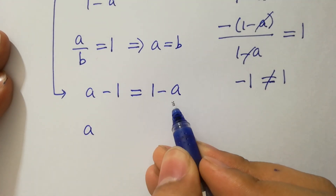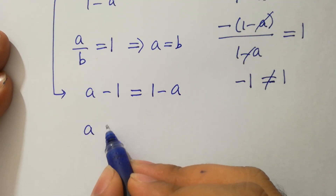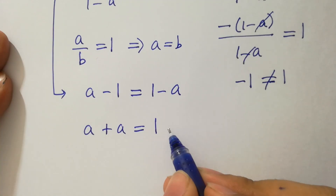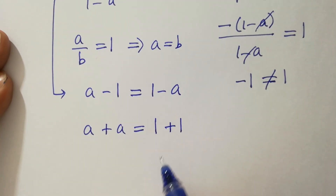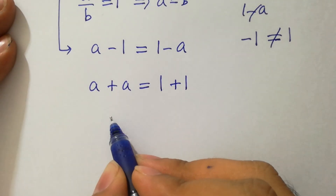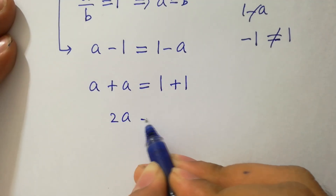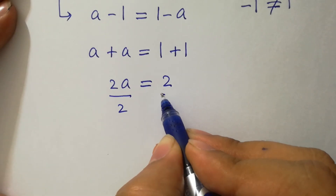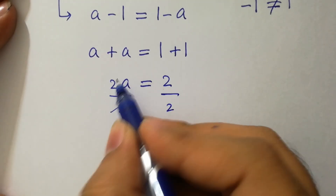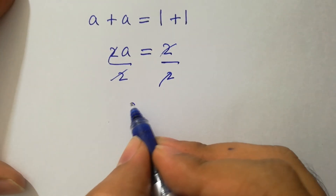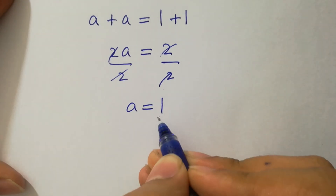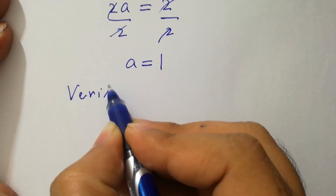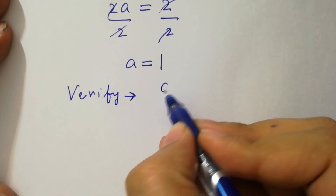Moving a to the left-hand side and 1 to the right-hand side: a plus a equals 1 plus 1, so 2a equals 2. Dividing by 2 on both sides, the 2 cancels and we have a equals 1.